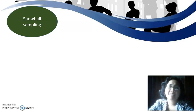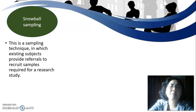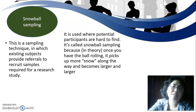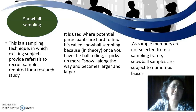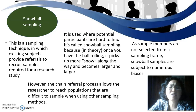Snowball sampling is a technique in which existing subjects provide referrals to recruit additional samples required for research. It is used when potential participants are hard to find. It is called snowball sampling because, in theory, once you have the ball rolling it picks up more snow and becomes larger and larger. As sample members are not selected from a sampling frame, snowball samples are subject to numerous biases. However, the chain referral process allows researchers to reach populations that are difficult to sample using other methods.